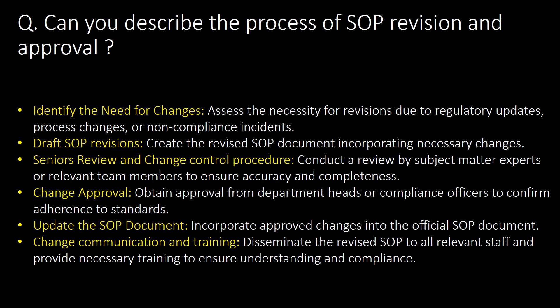Can you describe the process of SOP revision and approval? Here are the 6 important steps: Step 1, identify the need for changes; Step 2, draft the SOP revision; Step 3, senior review and change control procedure; Step 4, change approval; Step 5, update the SOP document; and the final very important step, Step 6, change communication and training.